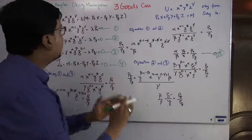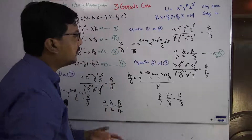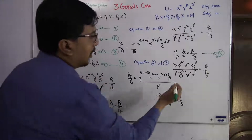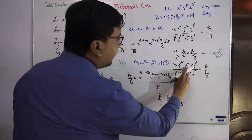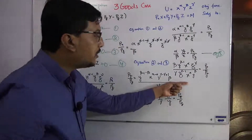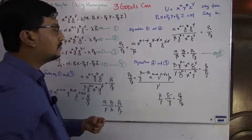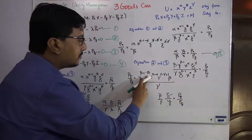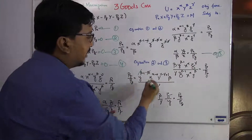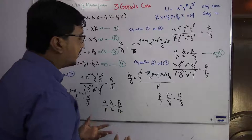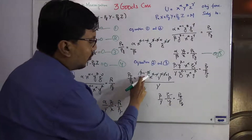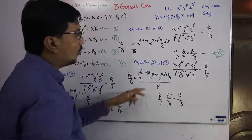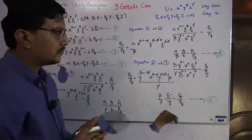Next we solve equations 2 and 3. We divide equation 2 by equation 3. The denominator variables move to the numerator with inverted powers: y^(β-1) in the numerator and y^β going to the numerator gives a net power of -1, so beta cancels. Alpha and gamma also cancel out. The remaining result is: (β/γ) · (pz/py) = z/y, which we call equation 6.